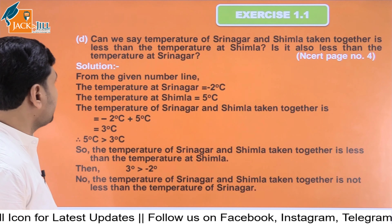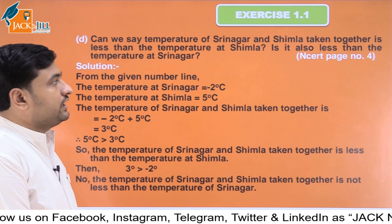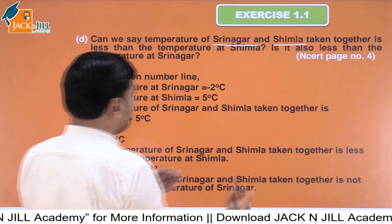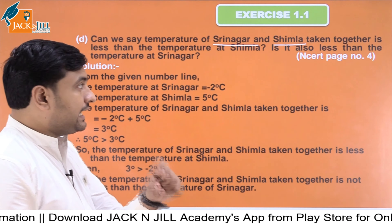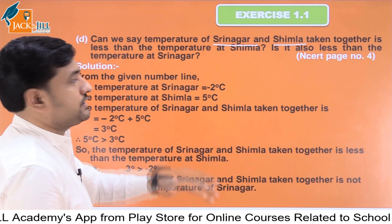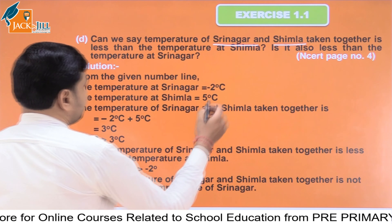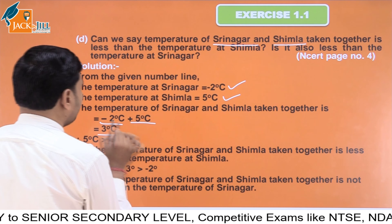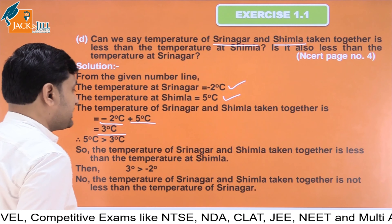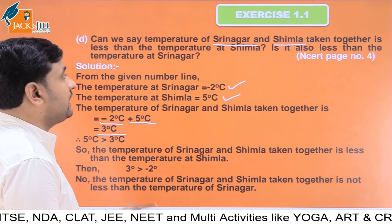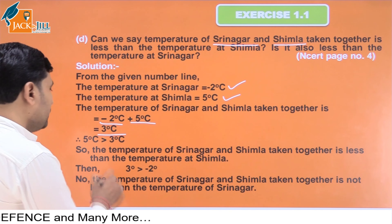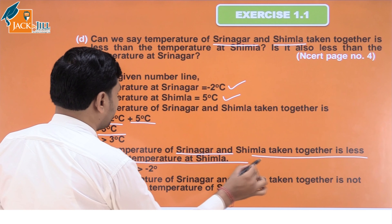The next question asks: can we say the temperature of Srinagar and Simla taken together is less than the temperature of Simla? If we add the temperatures of Srinagar and Simla together — minus 2 plus 5 — we get 3 degree Celsius. Since Simla's temperature is 5 degrees Celsius, the combined temperature of 3 degrees is indeed less than Simla's temperature of 5 degree Celsius.